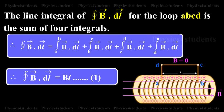Therefore, the integral of closed surface vector B dot vector dl equals B L. This is equation 1.